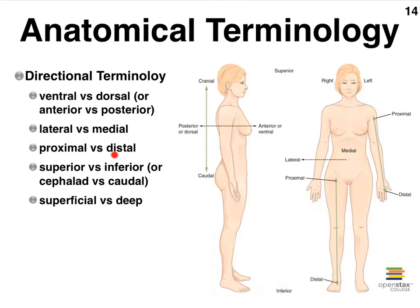We're going to skip proximal and distal for a second and go to superior and inferior, because they're a little easier to understand. Clearly, the head sits superior to the trunk of the body; the trunk is inferior to the head. You can use the term cephalad for superior, and caudal — which means towards the tail — for inferior. Superficial versus deep: a good example would be that our skin sits superficial to our muscles; therefore, our muscles sit deep to our skin.